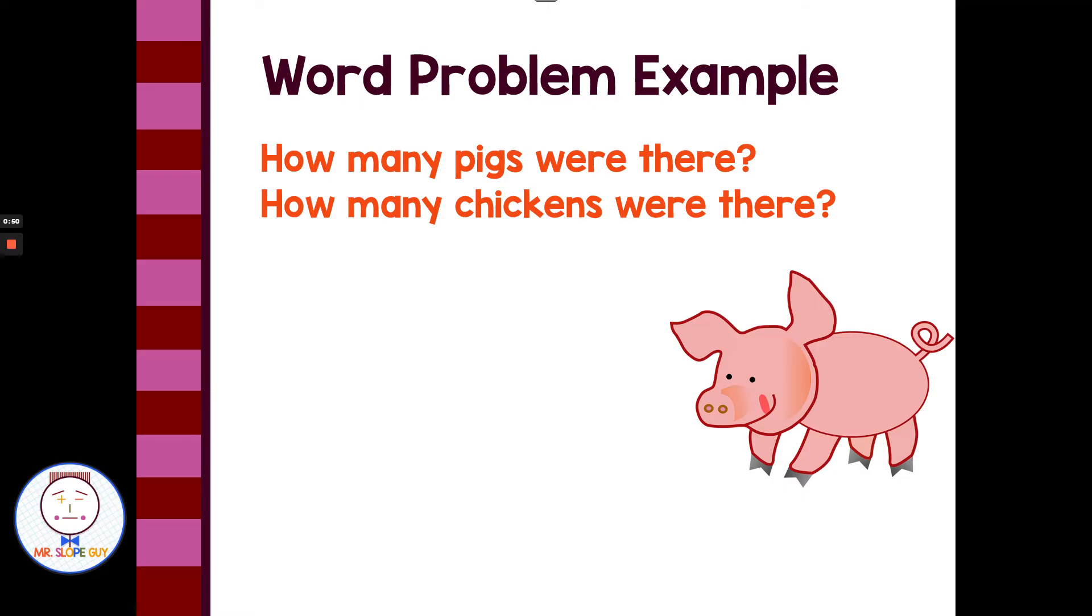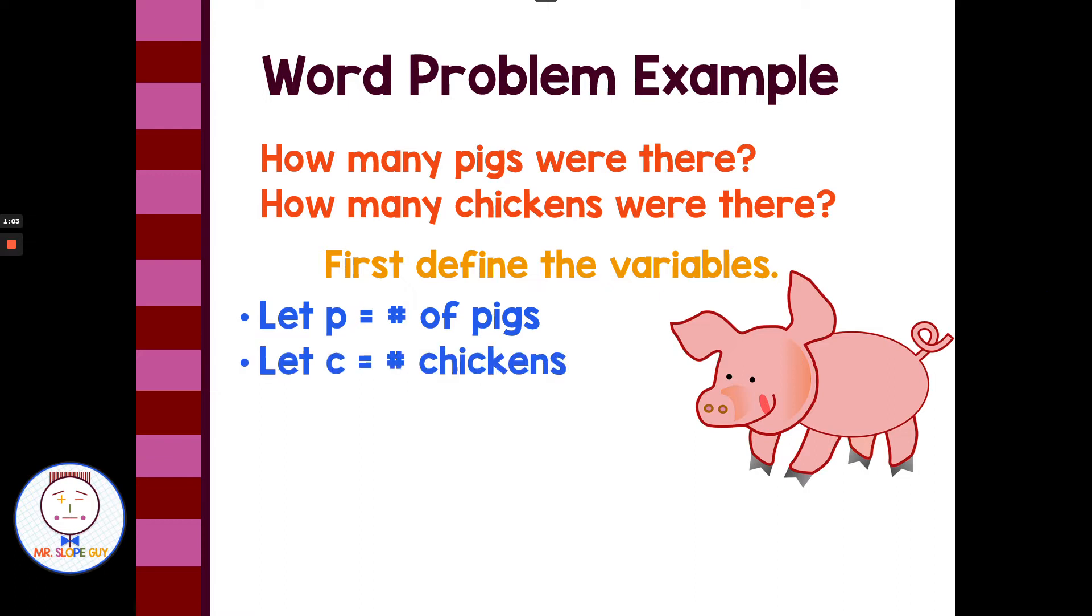The two variables are the two things talked about most in the word problem. In this case, we have pigs and chickens we're talking about. So when we define our variables, we want to first let p be the number of pigs and we'll let c be the number of chickens. Then we have to use these two variables and write two equations.